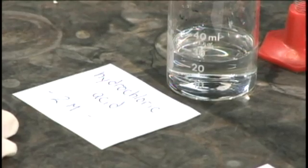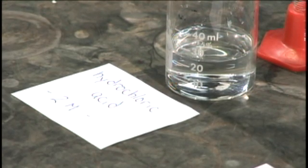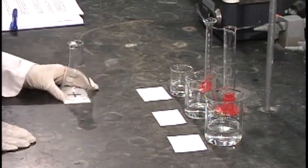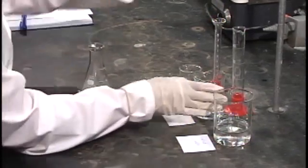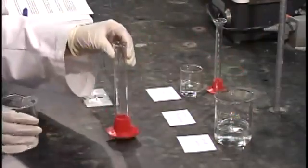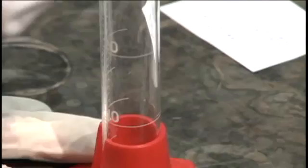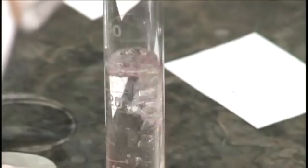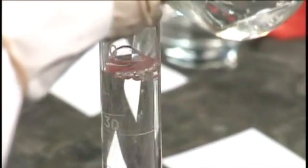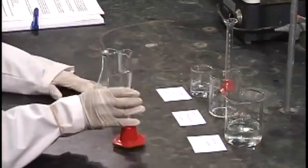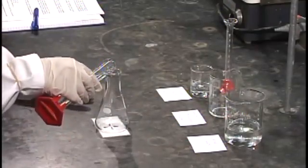We're going to be starting not with 45 milliliters of sodium thiosulfate, but with 40 milliliters. We'll measure out, in a graduated cylinder, 40 milliliters of our 0.2 molar sodium thiosulfate and pour it into our flask.